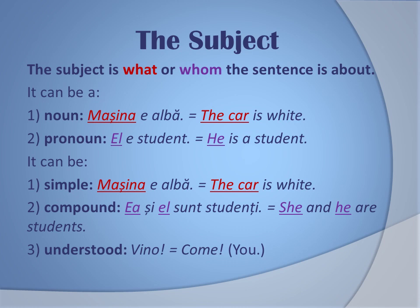Let's start with the very basics of the subject. Like in English, the subject is what or whom the sentence is all about. So it can be a noun, like in 'mașina e albă' — the car is white. It can be a pronoun, like 'el e student' — he's a student.